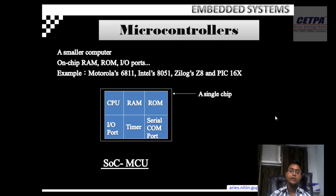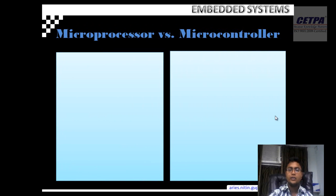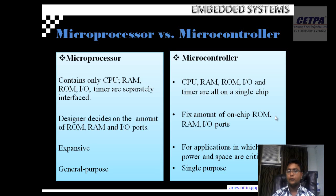This is the microcontroller unit. It contains a CPU, RAM, ROM, ports, timers, and serial ports — all of them on one chip. If I talk about the difference between microprocessor and microcontroller: a microprocessor has no RAM, ROM, input/output ports or timers — nothing. But the microcontroller has all of them.